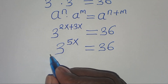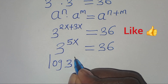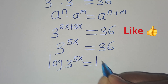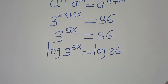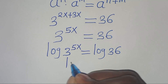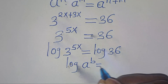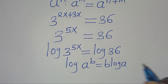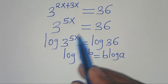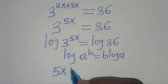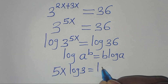To solve for x, let's introduce logarithm on both sides: log(3^(5x)) equals log(36). Using the power property — log(a^b) = b·log(a) — this becomes 5x·log(3) equals log(36).